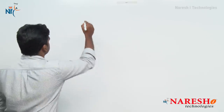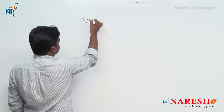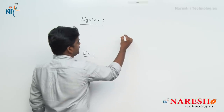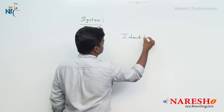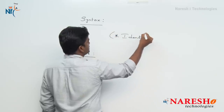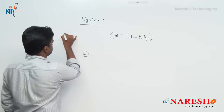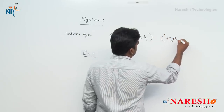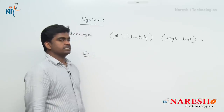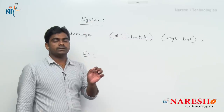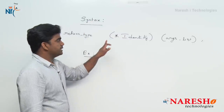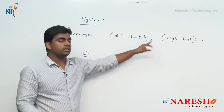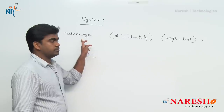Observe here. The syntax of a pointer to function: the identity is the pointer name, and you must place it inside parentheses along with the pointer symbol. Then the return type and next the arguments list — how many arguments it is taking. This is the declaration.